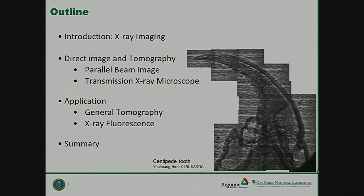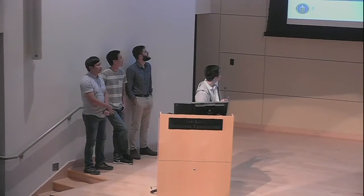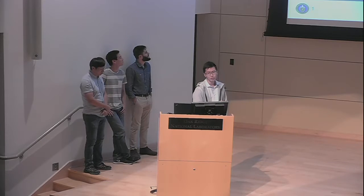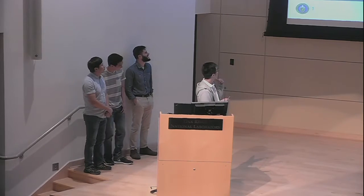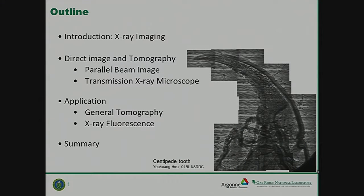This is our outline. First, I will give an introduction to x-ray imaging, and then we will see the direct image and the tomography with the parallel beam image and the transmission x-ray microscope. My teammates will share about some applications of general tomography and x-ray fluorescence. Here I put an x-ray image from the transmission x-ray microscope — it's from a centipede tooth taken by my former group member. Most of you are tired of Röntgen's wife's hand, so I use this image here instead.